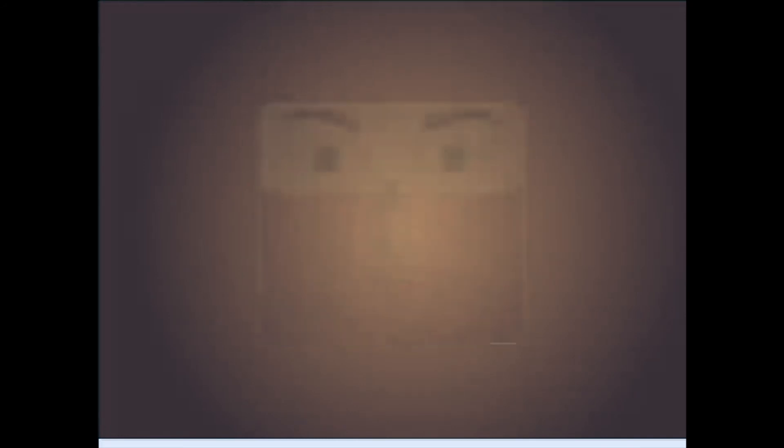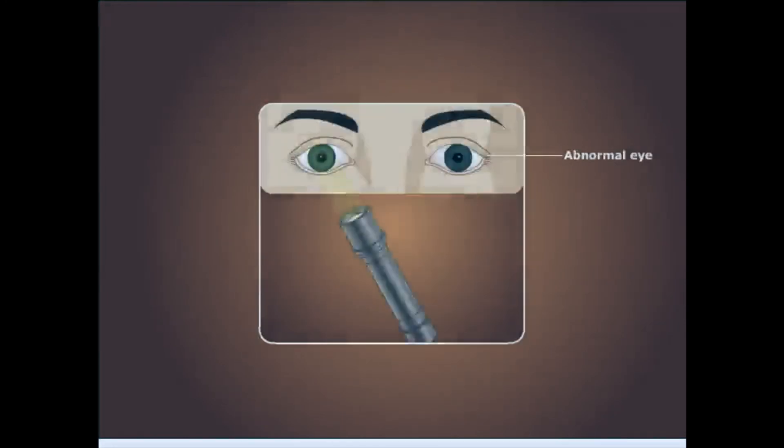Marcus Gunn pupil. The Marcus Gunn pupil is an afferent pupillary defect which is seen in conditions involving the optic nerve, such as ischemic optic neuropathy, optic neuritis, and glaucoma. When light is shined on the healthy eye, both pupils will constrict because the consensual light reflex remains intact. However, when light is immediately switched to the affected eye, this will lead to paradoxical dilation of both pupils.